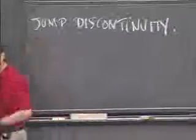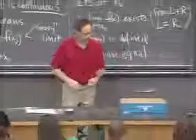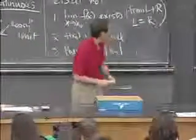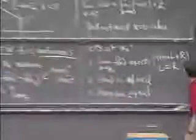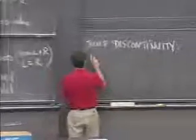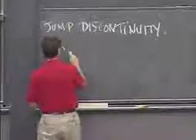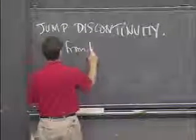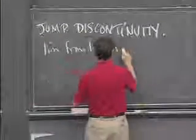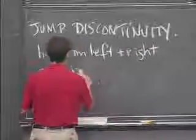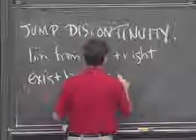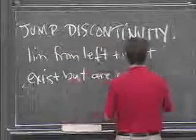So what would a jump discontinuity be? Well, we've actually already seen it. The jump discontinuity is the example that we had right there. This is when the limit from the left and right exist but are not equal.